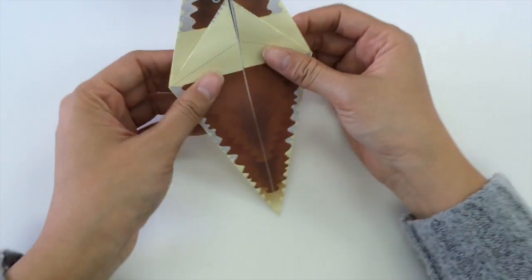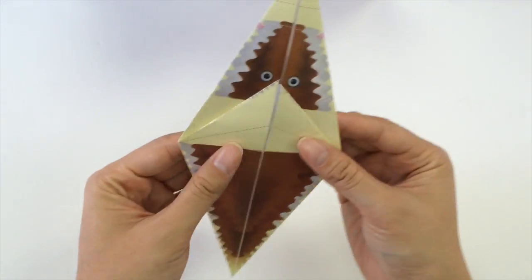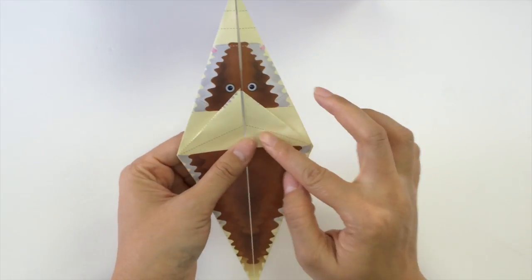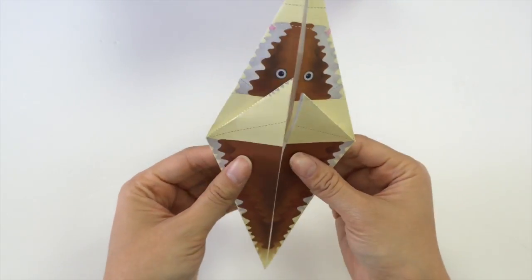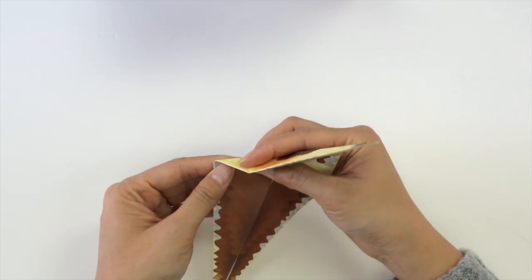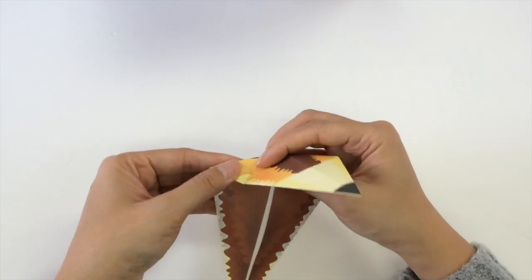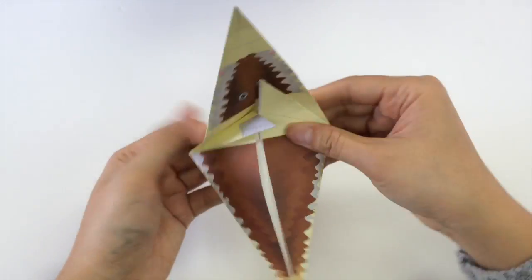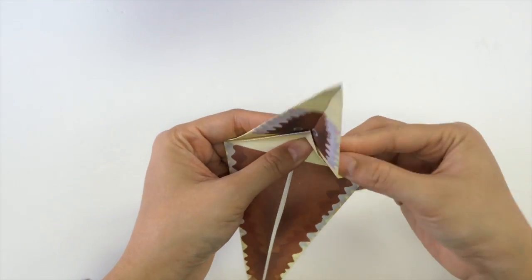Next, this part is a little tricky. We have to fold along these dotted lines here at the same time folding the bottom part backwards. So we're going to fold this part inwards. First, let's make one side fold here and fold this other side here.